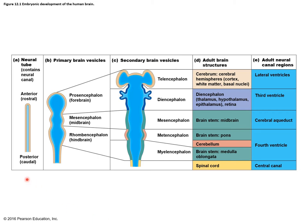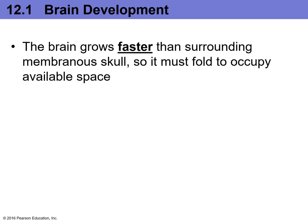During embryonic development, the neural tube begins forming and you start to see little swellings that will eventually grow into the different components of the brain. The upper portion in an adult brain corresponds to the cerebrum, the highest level of functioning. Below that is the diencephalon, then the brain stem, and then the spinal cord.